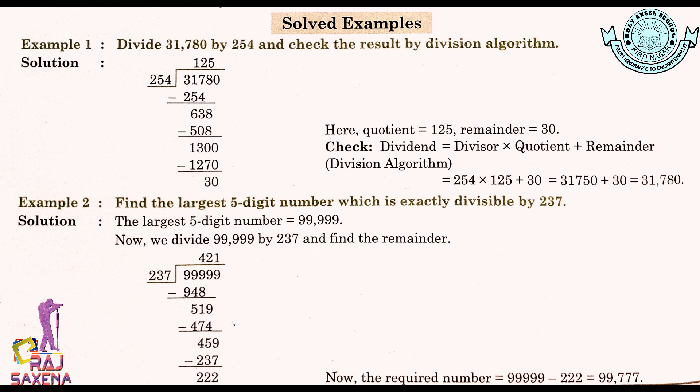Toh divisor × quotient + remainder should be equal to dividend. Divisor tha 254 multiply by quotient tha 125, plus remainder jo ki hai 30. BODMAS ke rule se multiply pehle kiya jata hai, toh 254 × 125 = 31750, aur ismein remainder 30 jodne par result aata hai 31780 — jo ki dividend ke barabar hai. Agar hamara result dividend ke barabar aa jata hai toh iska matlab hai ki hamara division correct hai.